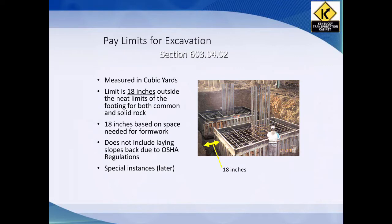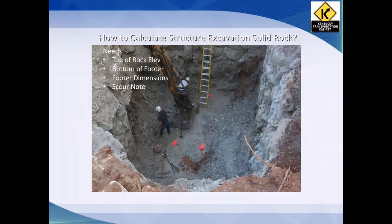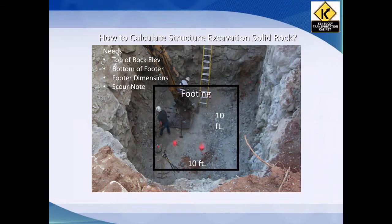How do you calculate structural excavation in solid rock? A couple things you're going to need: first, the top of rock elevation, gotten with surveying before you start excavation. Then we need to know the bottom of the footer — that's what they need to excavate to — which comes off your plans. And we need to know the footer dimensions, and also if there's a scour note saying we don't give them the 18 inches. For this example, we don't have a scour note, so the dimensions of our footer are 10 by 10. We give them the additional 18 inches — a foot and a half all the way around — which since there are two sides, that's an additional three feet to our dimension. So a 10 by 10 footer is now 13 by 13. You won't just have a single depth given; you will have a depth at each corner of the footer and just average those to get the average depth.